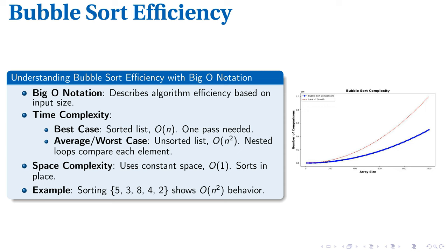To substantiate these theories, we have a graph illustrating the actual versus ideal comparison growth in bubble sort. The practical bubble sort comparisons, shown by a blue line, align with the red dashed line indicating the ideal n² growth, validating our time complexity.